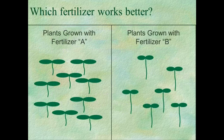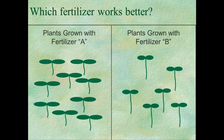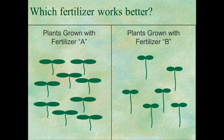Okay, so this is an example we talked about in class. We looked at these two groups of plants — one was grown with fertilizer A, one was grown with fertilizer B. If you were designing an experiment, what sorts of things would you do to make sure it was a good experiment? What sorts of things would you have to control, measure, or change between these two groups?